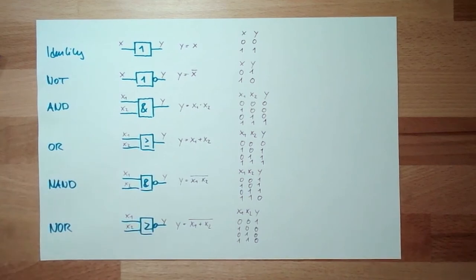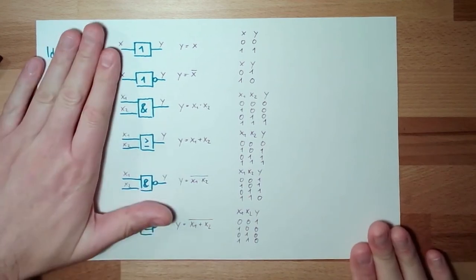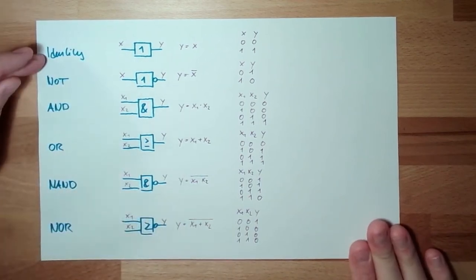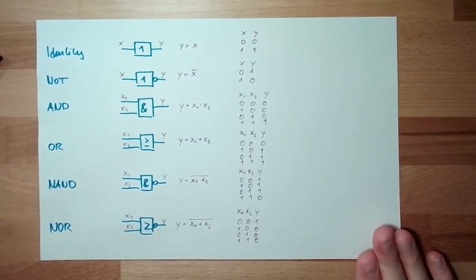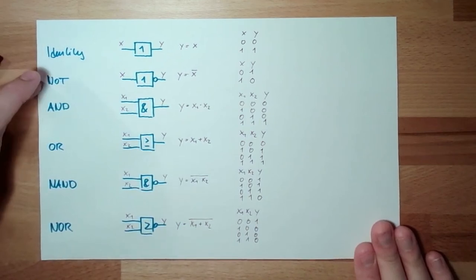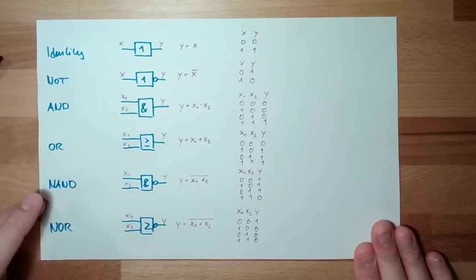Basically these are the most common base elements: IDENTITY, NOT, AND, OR, NAND, NOR. In German: Identität, Nicht, Und, Oder, Nicht-Und, Nicht-Oder. There are two more extended elements as well.